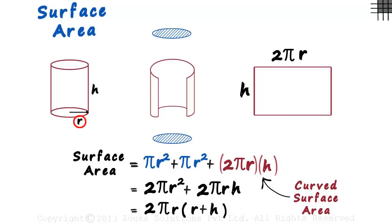If we are given the radius of the base and the height of the cylinder, using this formula, we can find out its total surface area.